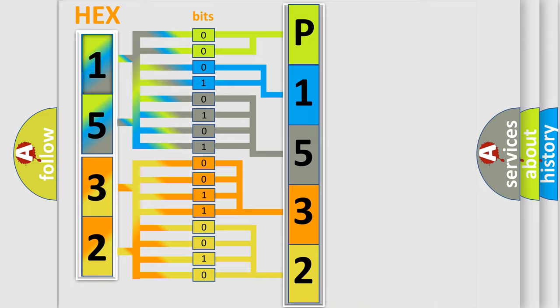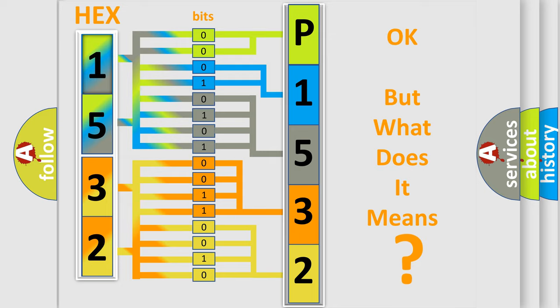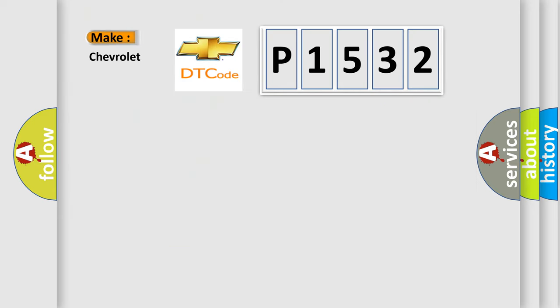We now know in what way the diagnostic tool translates the received information into a more comprehensible format. The number itself does not make sense to us if we cannot assign information about what it actually expresses. So, what does the diagnostic trouble code P1532 interpret specifically for Chevrolet car manufacturers?